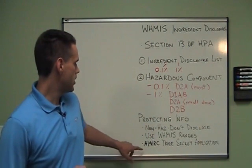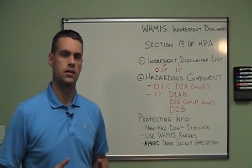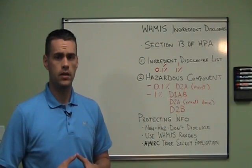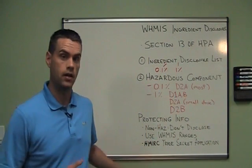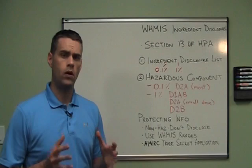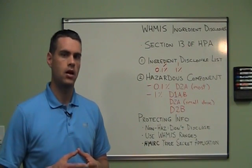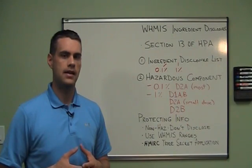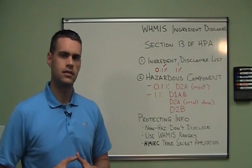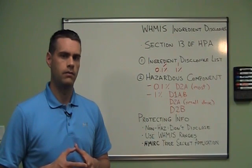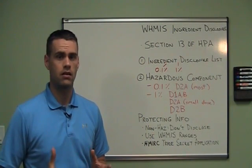Finally, you can apply to a Canadian agency known as HIMRIC for a trade secret application. If you have a genuine trade secret and you can convince HIMRIC of this, they'll issue you a trade secret number which you can put on your MSDS instead of the component name. In reality, it's quite difficult to pull off — most of our clients haven't bothered — but it is a third option.